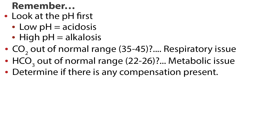Let's go over a review. Look at the pH first — if it is low, it indicates acidosis; if it is high, it indicates alkalosis. Next, look at the CO2. The respiratory system controls CO2, so determine if it is higher than 45 or lower than 35. Next, look at the HCO3, which is controlled by the kidneys — is it less than 22 or greater than 26? Then determine if there is any compensation present.